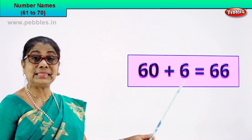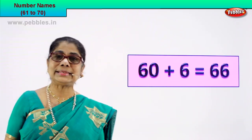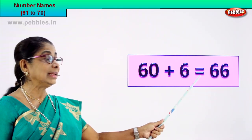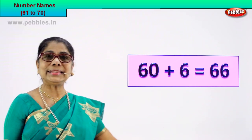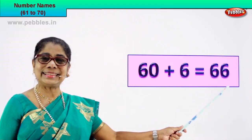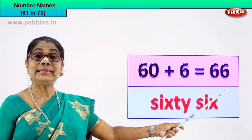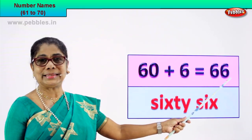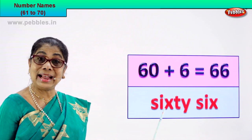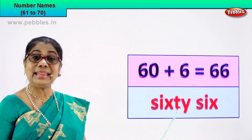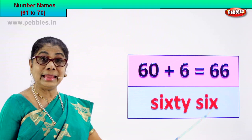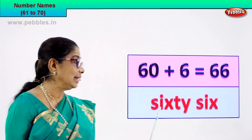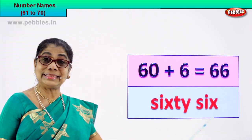60 plus 6 is equal to 66. 66 is the numeral. How do we write its name? Spell and write its name. You know to spell 60, you know to spell 6. S-I-X-T-Y, 60. S-I-X, 6. 66 — numeral 66. Its name is sixty-six. Good!